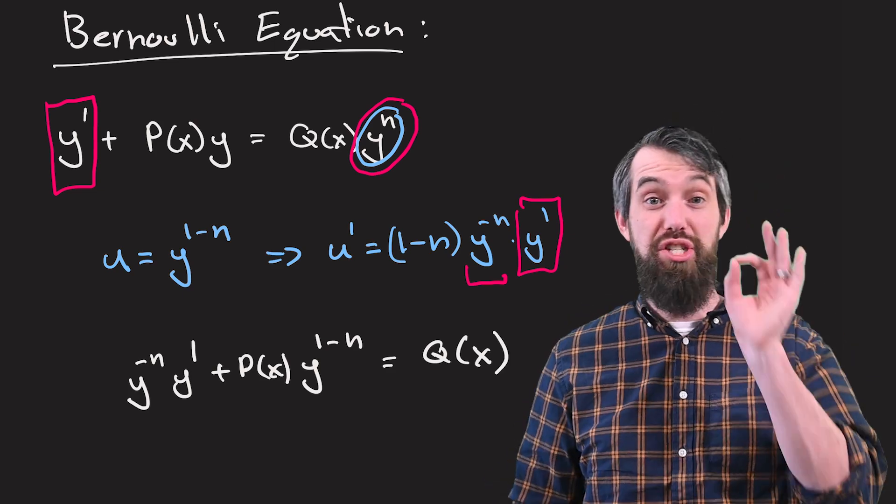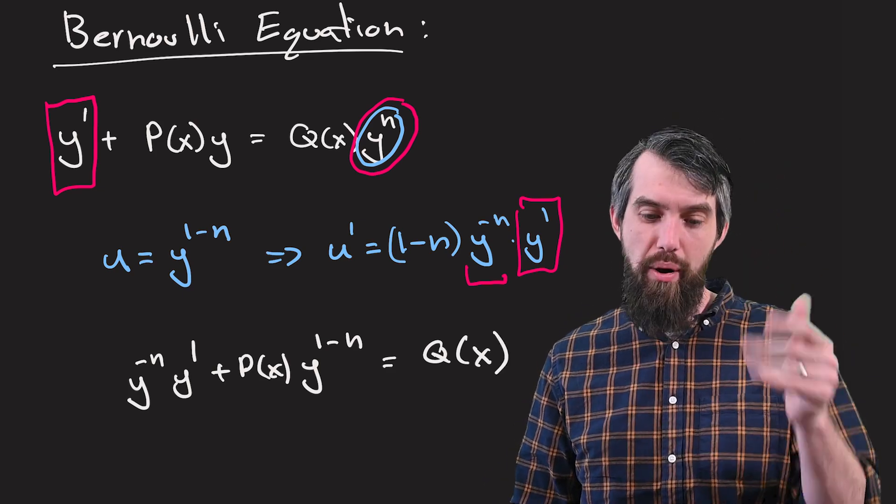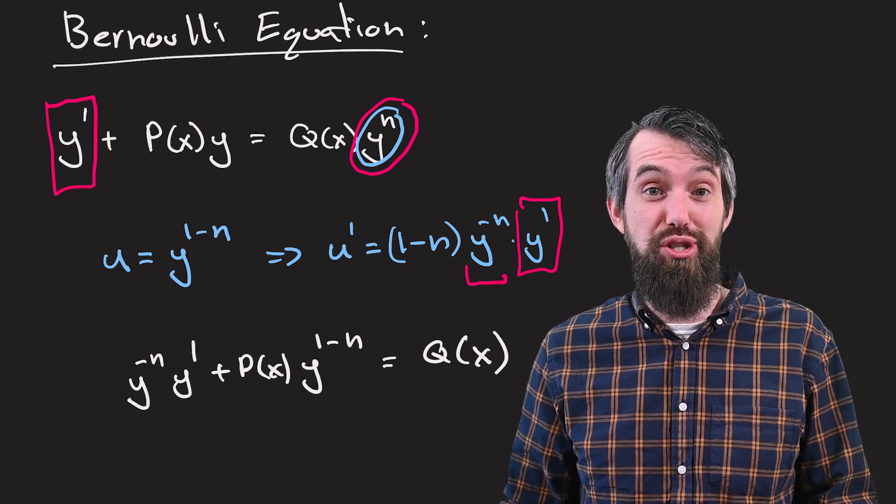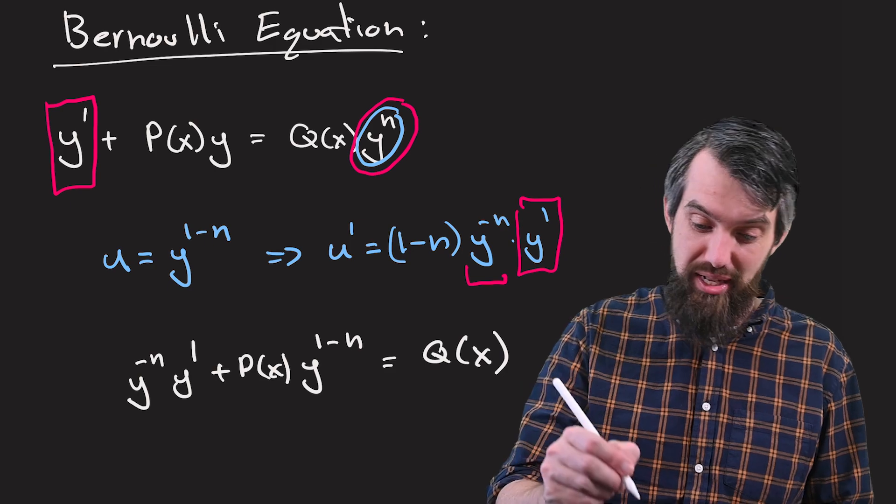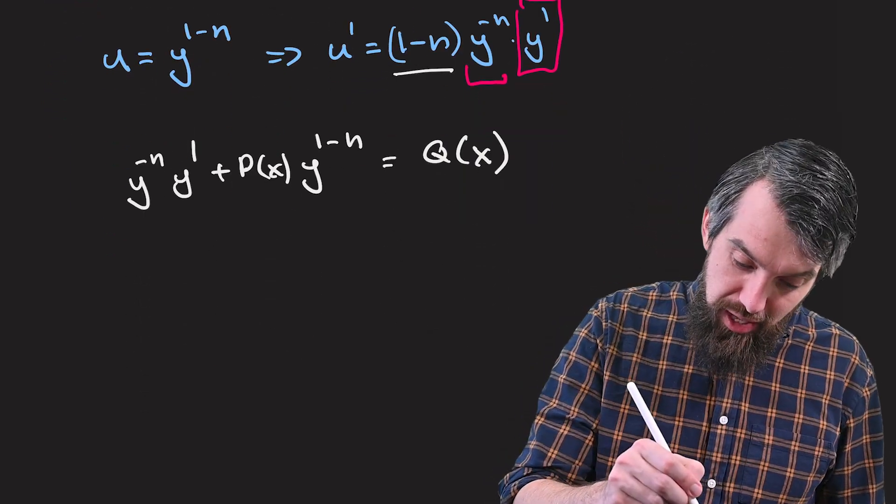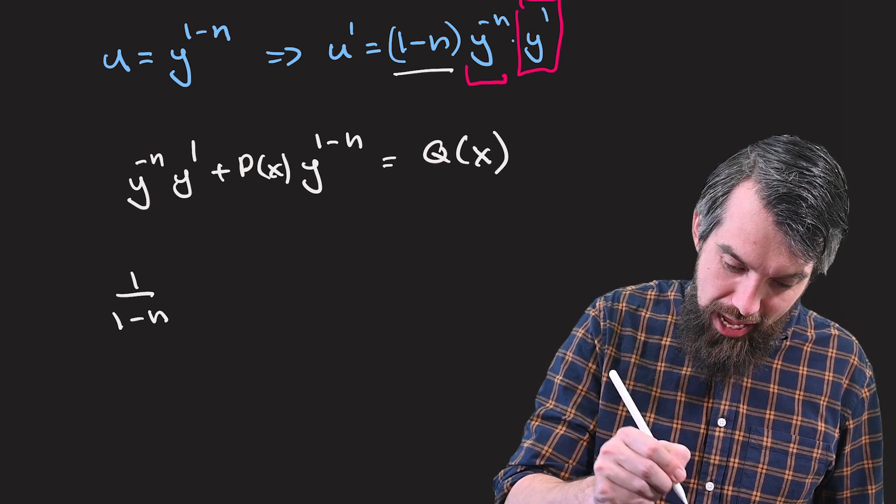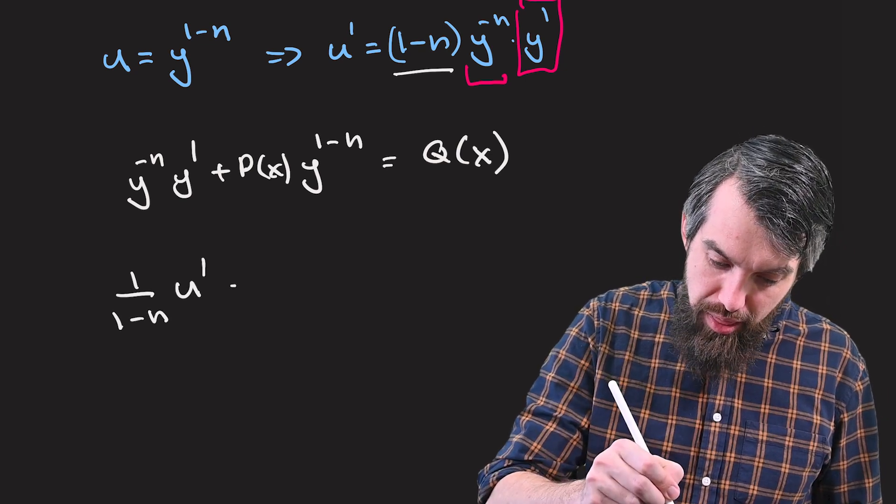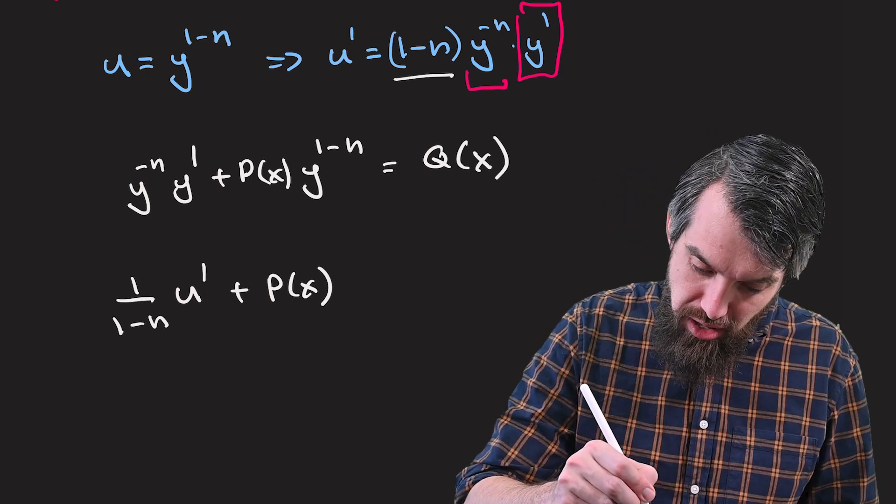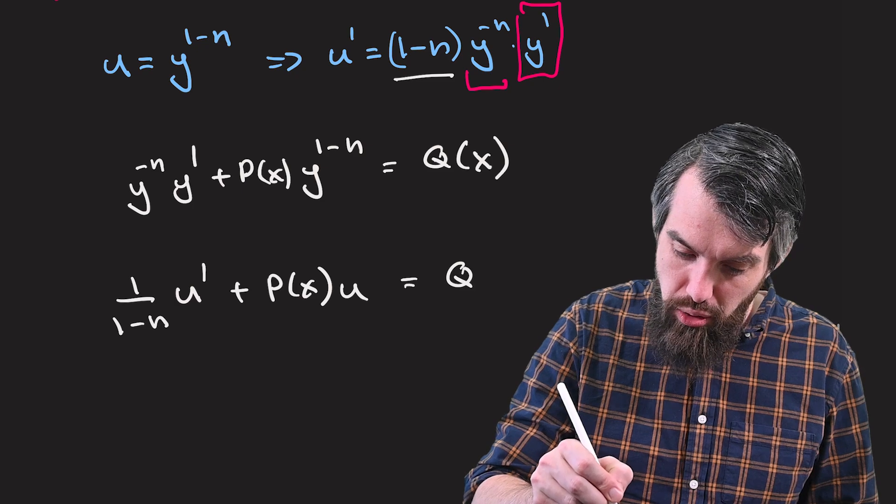So that's our differential equation where I just divide it out by y to the power of n. And then I can look at the left expression, and this is pretty darn close to my expression for u prime. The only thing that's missing is this 1 minus n. So if I plug this in, this is going to give me 1 over 1 minus n times u prime. Then I'm going to have a p of x, and then y to the 1 minus n. Well, that was exactly u. So I have a u here, and then just equal to q of x.